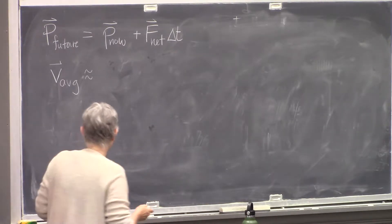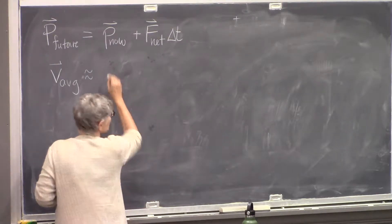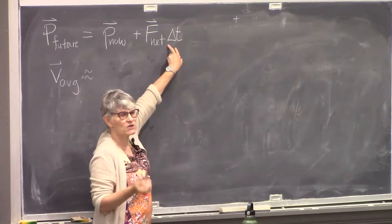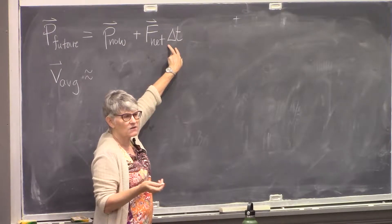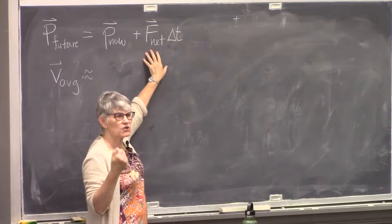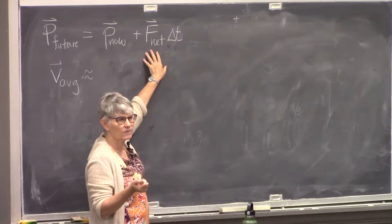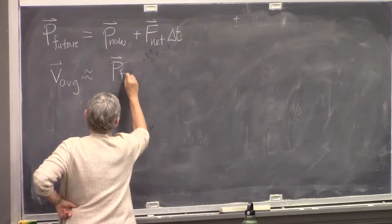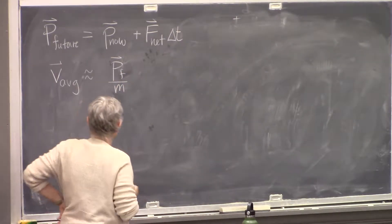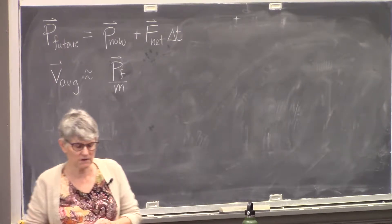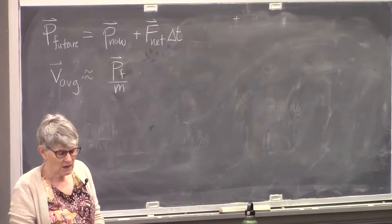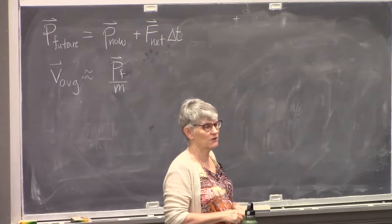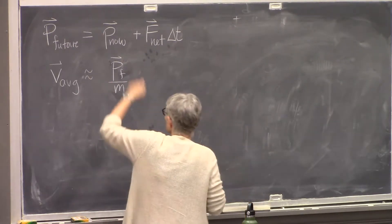The approximation we're going to use in most of our work is that we're going to be taking very small time intervals delta t — small enough that the net force on this object doesn't change significantly during that interval. We're going to use the final momentum over the mass as an approximation to the average velocity. At that point we have a way to predict motion forever, open-endedly into the future, because we can just keep doing this.